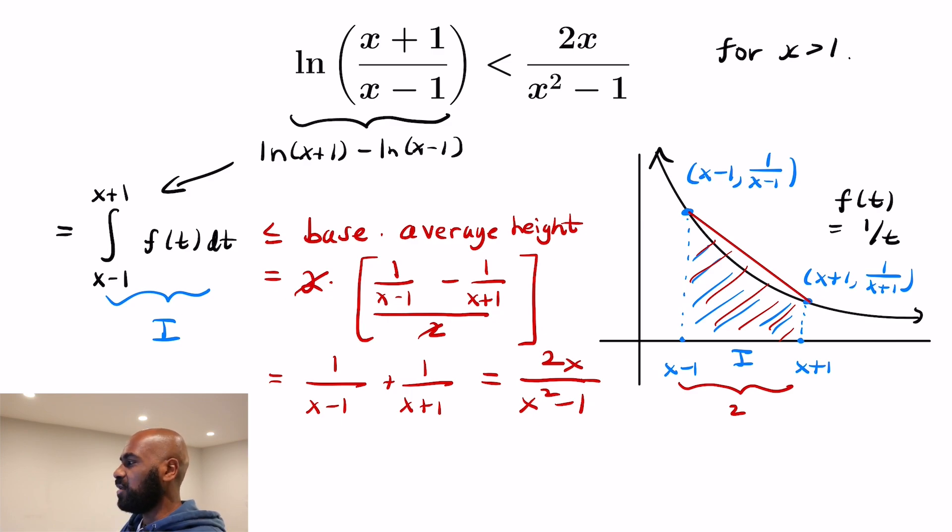Now it seems random that the thing that we got was exactly what we wanted. But this is a good approach for using integral calculus to get inequalities. Look at the function that you have. If there's a difference of two things that look the same, ln of something in this case, then you can represent the difference as an integral and get an upper bound using the shape of the function.